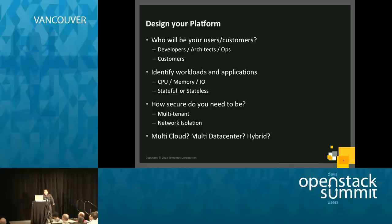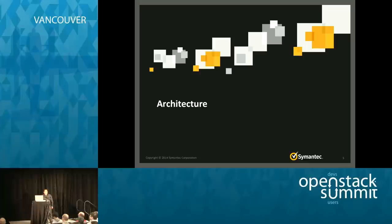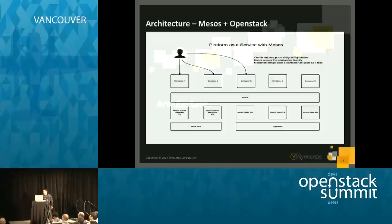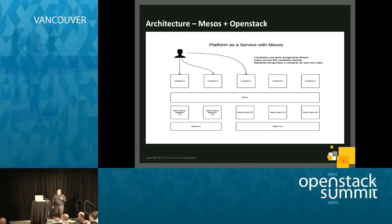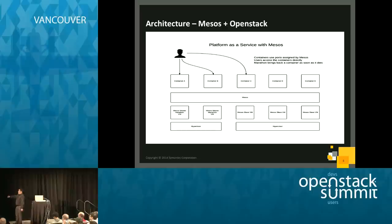After you've designed your application, let's look at the architecture. I'm going to show you three types: one using Mesos, one using Kubernetes, and one using Mesos and Kubernetes together. On the diagram, you have your hypervisor, with a Mesos layer underneath — a master and then the Mesos layer.